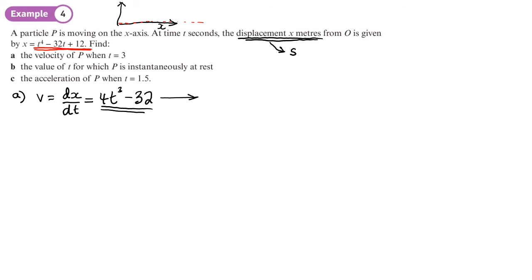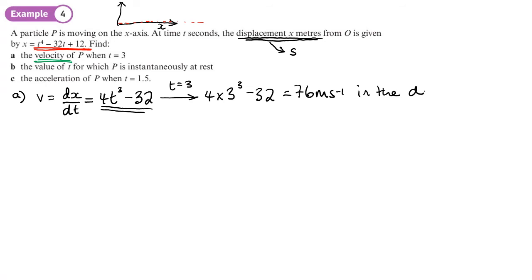We substitute t = 3: 4 × 3³ - 32 = 4 × 27 - 32 = 76 metres per second. Since the question asks for velocity (not speed), we must state the direction. The value is positive, so P is moving in the positive direction of the x-axis — 76 m/s in the positive x-direction.